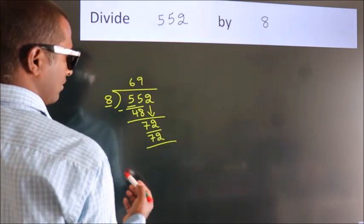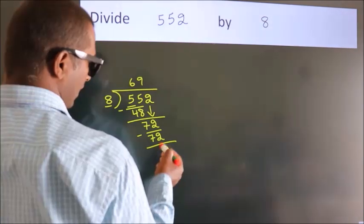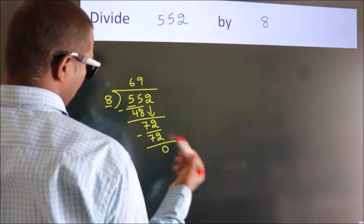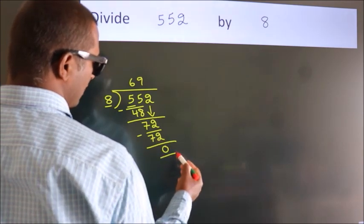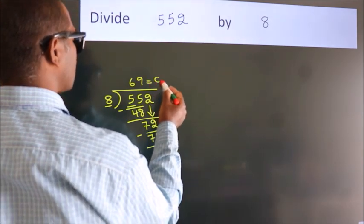Now we subtract. We get 0. After this, no more numbers to bring it down, and we got remainder 0. So this is our quotient.